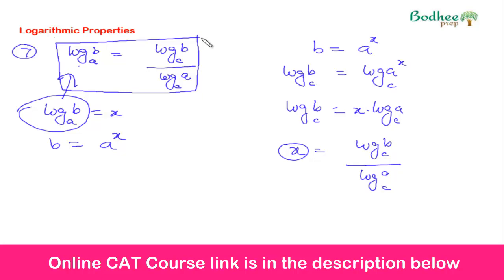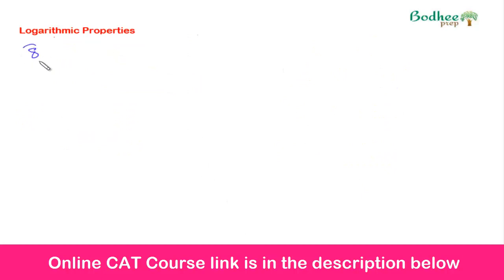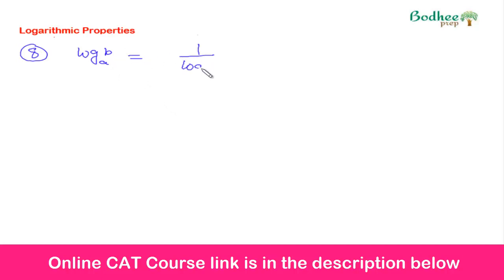Now let's move to the next: the eighth property, which is the reciprocal property. When we have log of b with base a, but we want the logarithm in base b rather than base a — that is, the argument becomes the base and the base becomes the argument — then log of b with base a equals 1 upon log of a with base b. The argument was b and base was a; now the argument becomes a and the base becomes b.